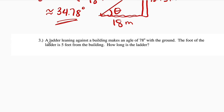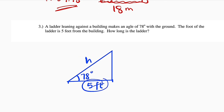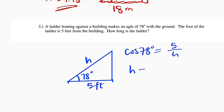Moving on to question number three. A ladder leaning against a building makes an angle of 78 degrees with the ground. The foot of the ladder is five feet from the building. How long is the ladder? This is the building, this is the ground level, and this is the ladder. The angle formed is 78 degrees, and from the base of the ladder to the building is five feet. The ladder is the hypotenuse and the five feet is the adjacent side, so the relationship is cosine. Cosine of 78 degrees equals five divided by H, so H equals five divided by cosine of 78 degrees, which is approximately equal to 24 feet to the nearest whole number.